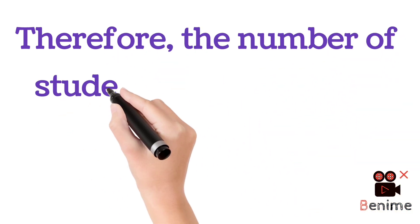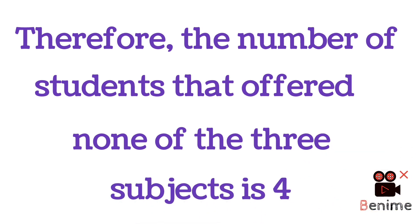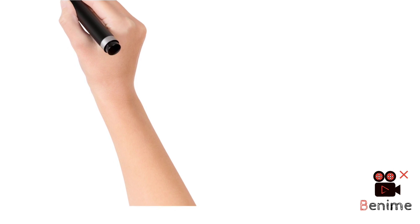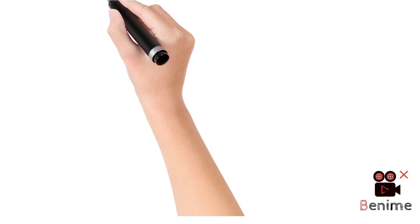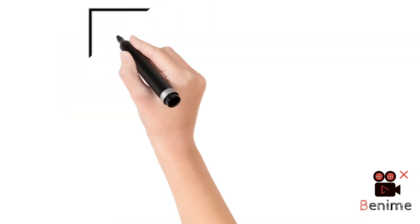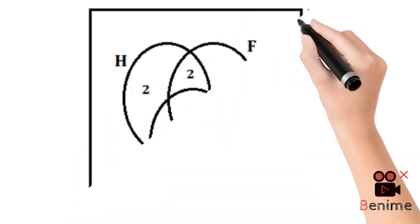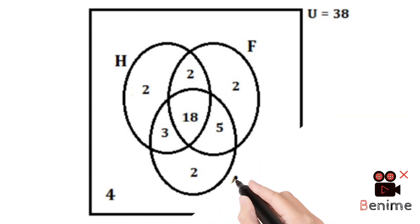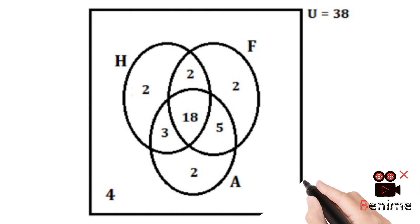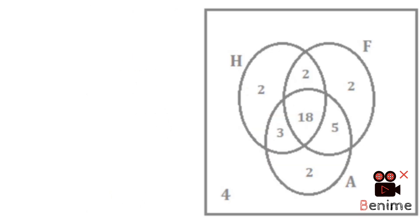Therefore, the number of students that offer none of the three subjects is 4. Here is the Venn diagram that represents the given information. You can see in the Venn diagram that we have three circles — one for French, one for History, and one for Agricultural Science — and all the values have been put into the right portions in the circles.